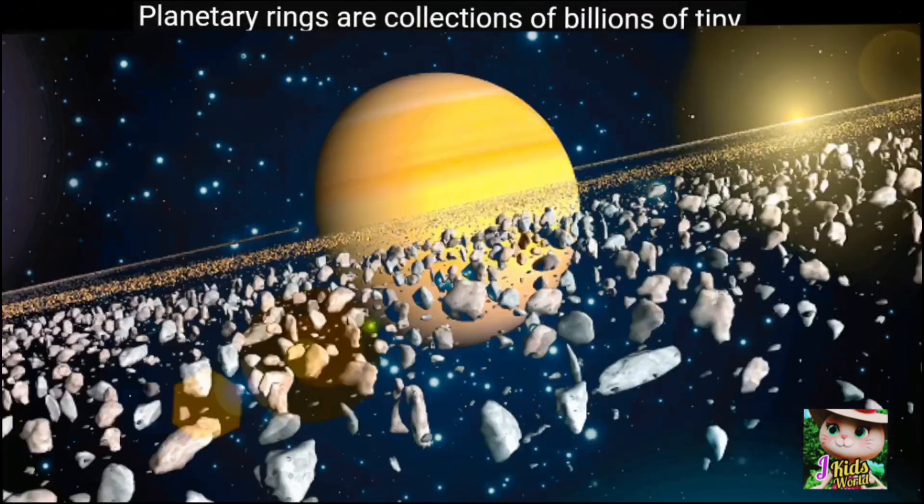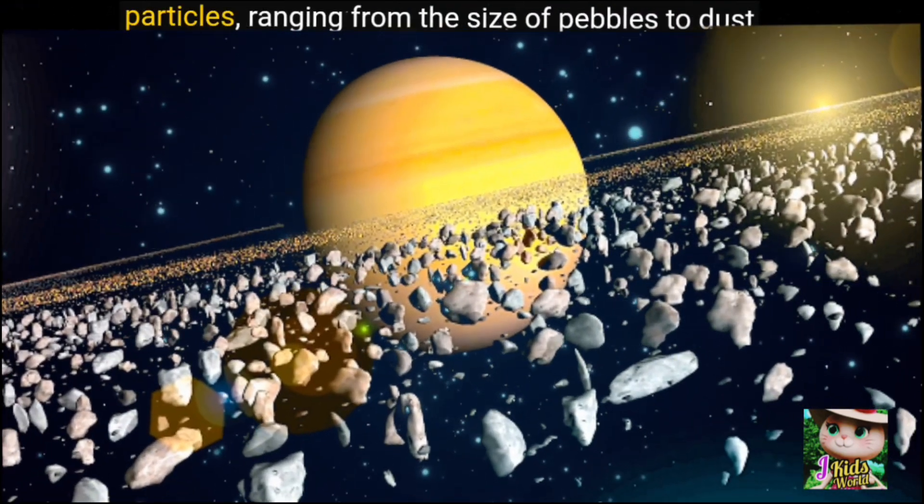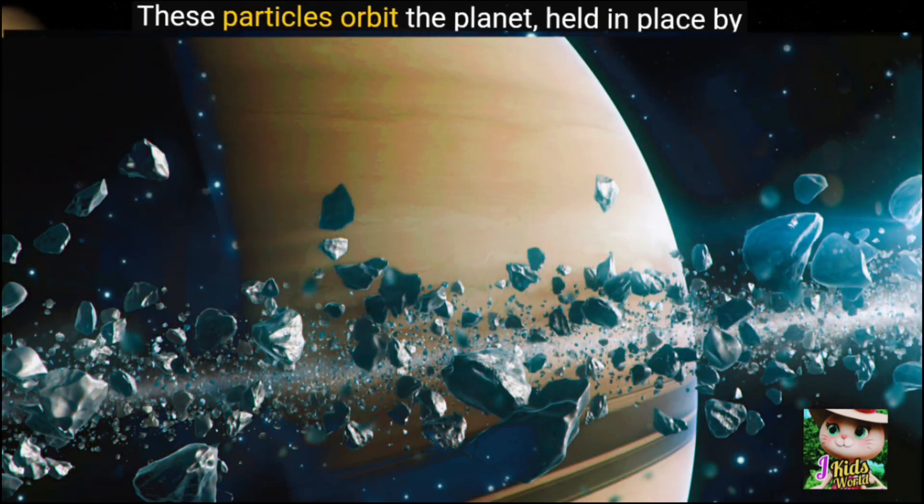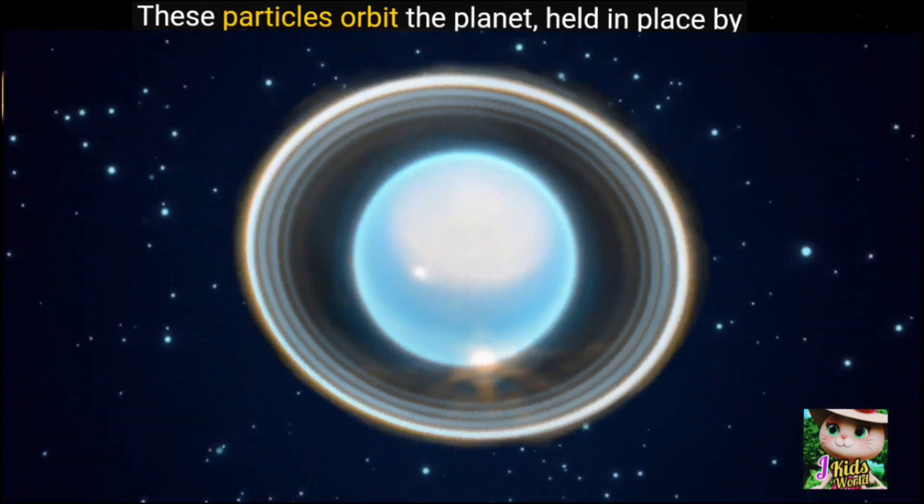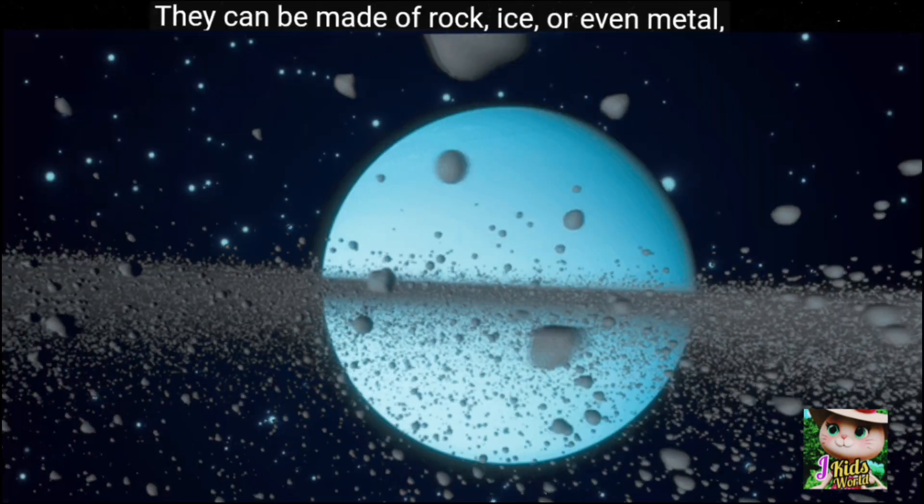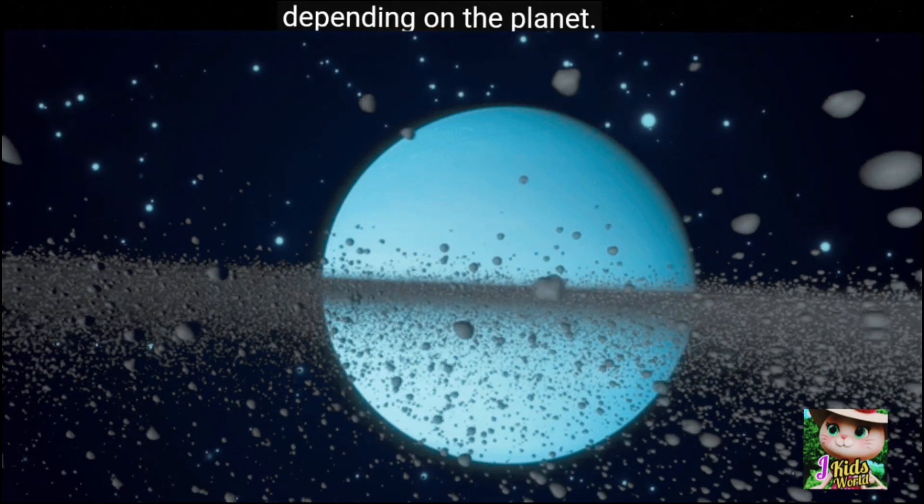Planetary rings are collections of billions of tiny particles, ranging from the size of pebbles to dust specks. These particles orbit the planet, held in place by its gravity. They can be made of rock, ice, or even metal, depending on the planet.